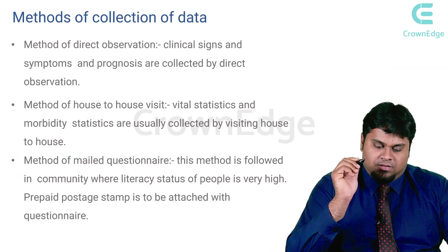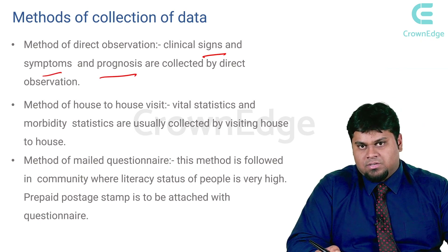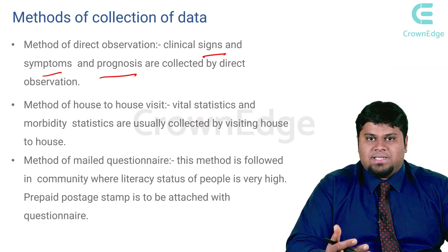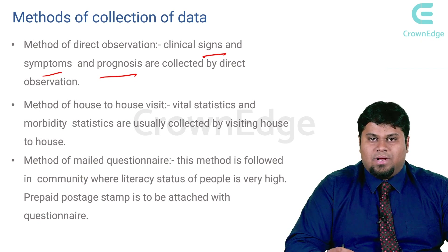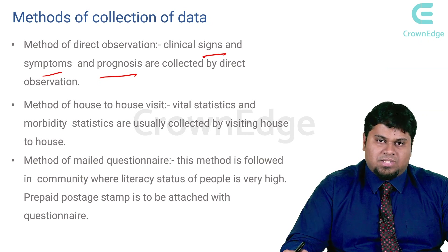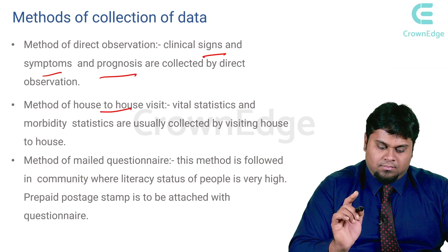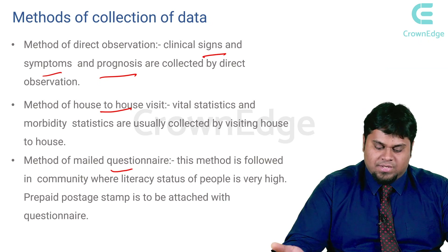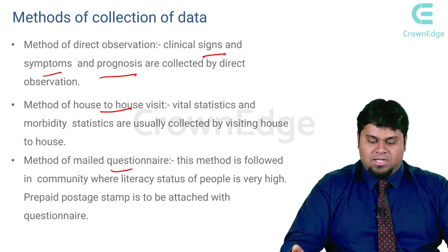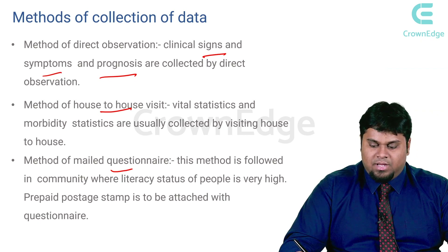The first method is direct observation, where clinical signs, symptoms, prognosis, and diagnosis are collected. When we examine a patient, we collect information on oral health status — from socio-demographic details to oral hygiene practices and intraoral and external examinations. The second method is house-to-house visits, where vital statistics and morbidity statistics are collected through door-to-door surveys. The third method is mailing questionnaires, used in communities with high literacy, where a postage-paid questionnaire is sent and returned by respondents.